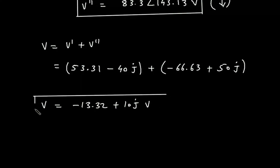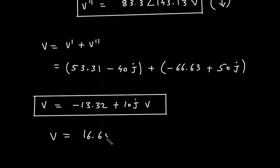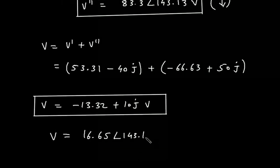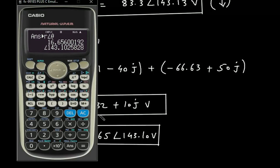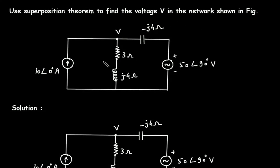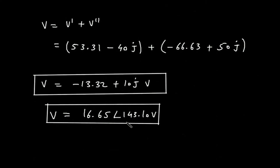This is the rectangular form. In polar form, V is 16.65 at an angle of 143.10 Volt. Using superposition theorem, the value of voltage V is 16.65 at an angle of 143.10 Volt. This is the final answer.